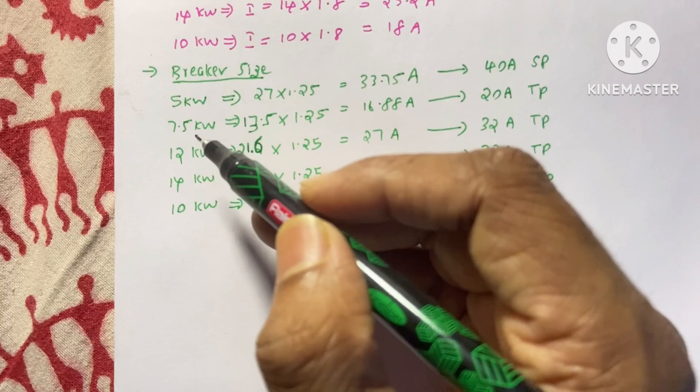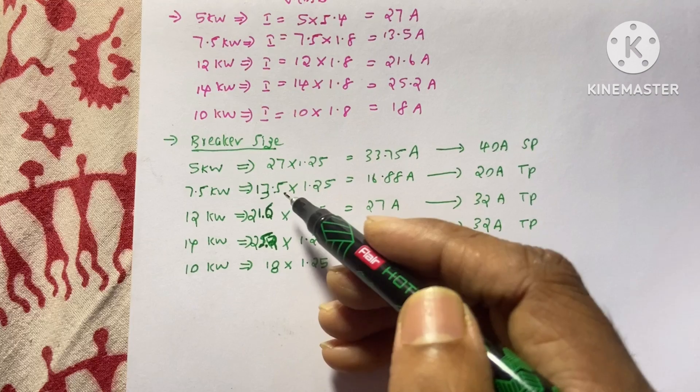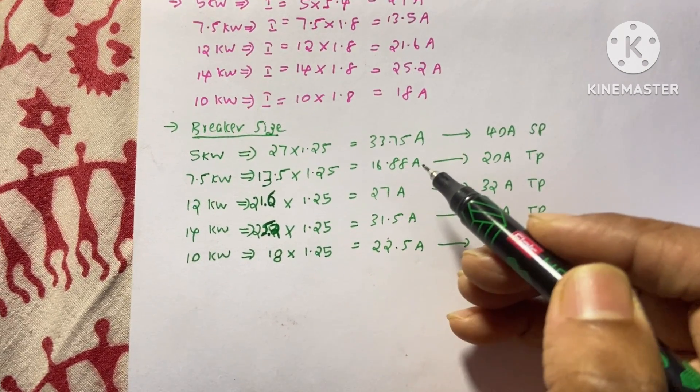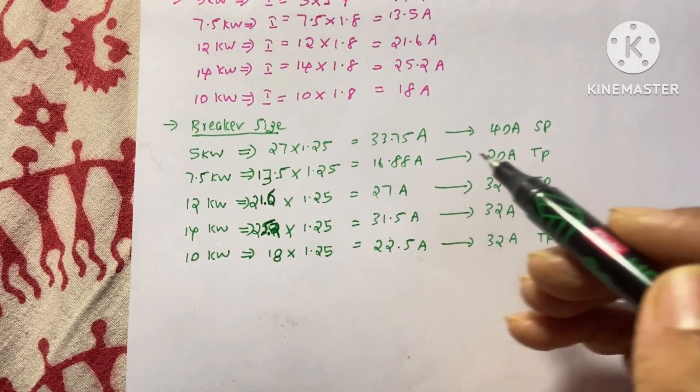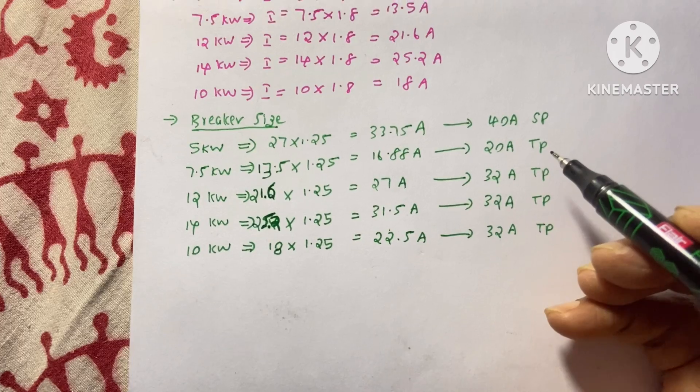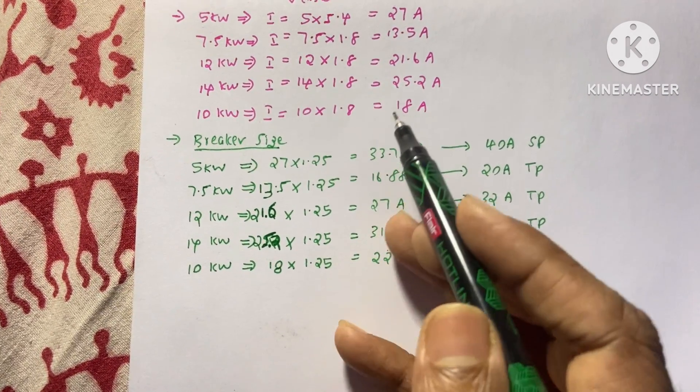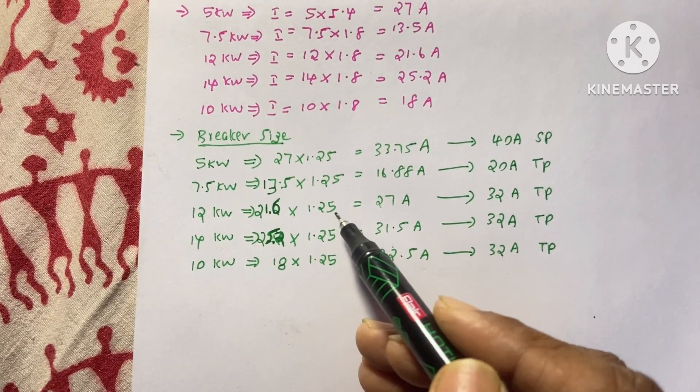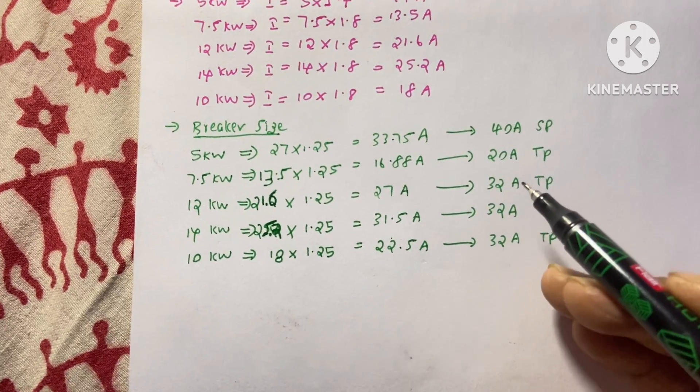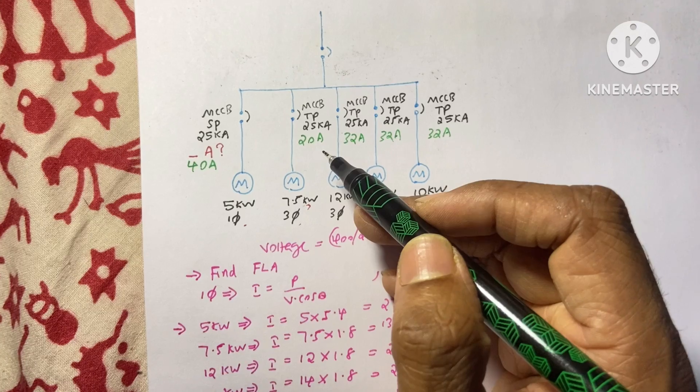And the second motor is 7.5 kilowatt three phase motor. And its full load ampere is 13.5 ampere multiplied by 1.25. We will get 16.88. The next higher size is 20 ampere three pole because it is three phase motor. Just like that we have already done all these calculations. This full load ampere multiplied by 1.25. Then we will get these things. And we can choose the next higher size MCCB.